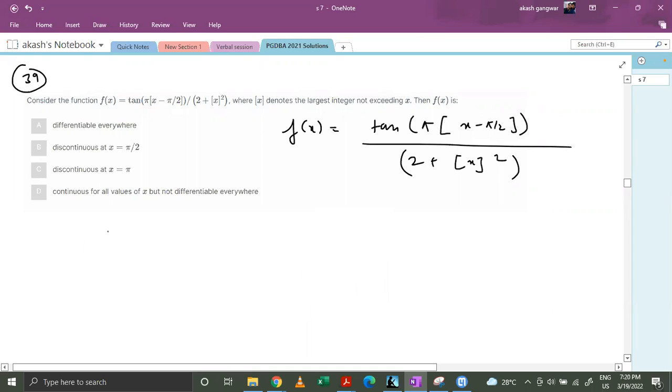Now the problem arises when this denominator can also become 0. But this is an integer function, GIF function. This is a positive number. This is always greater than equals to 0. So basically the denominator is always greater than 0. This cannot be 0. Numerator is always 0. So basically f(x) equals to 0.